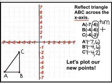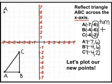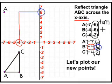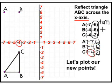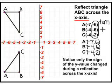Now let's plot each of the ordered pairs. The new point A is going to be located at negative 7, positive 6. The new B location is at negative 4, positive 6. And point C is located at negative 4, positive 2. When you connect all of the dots, we have our new right triangle ABC, which was reflected across the x-axis.